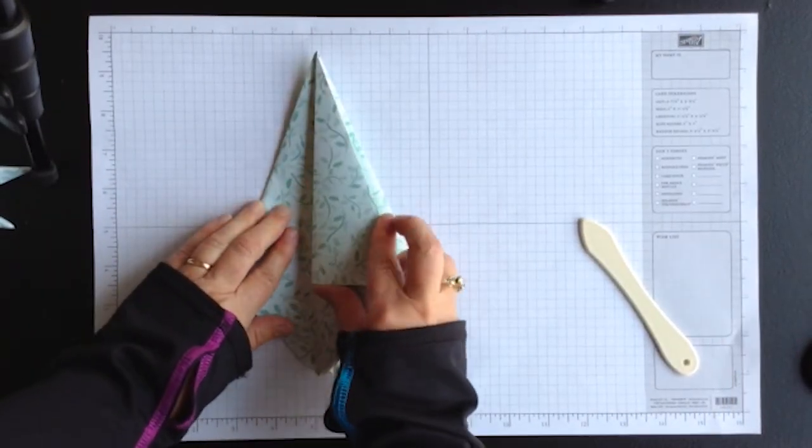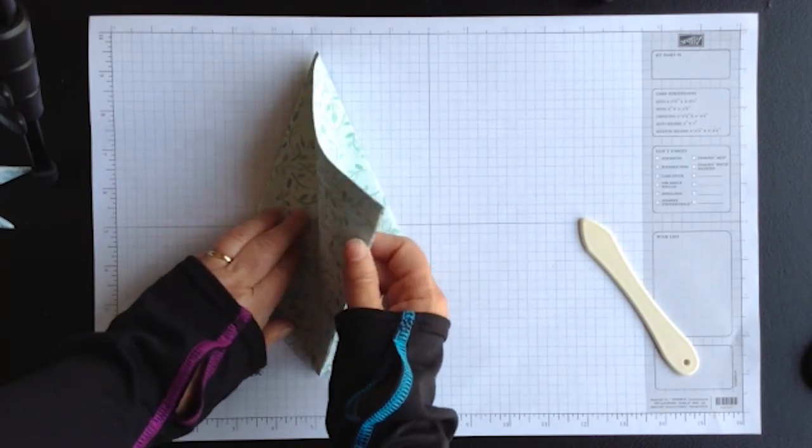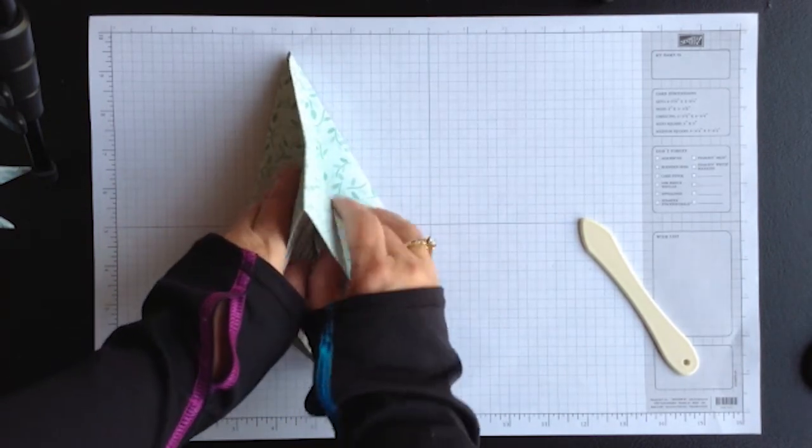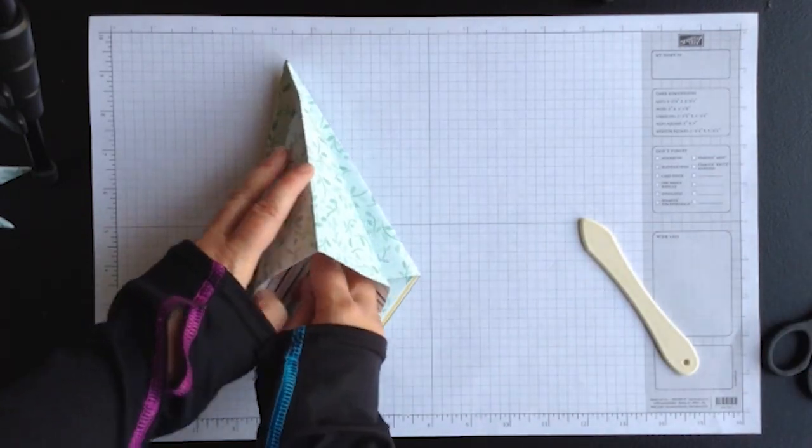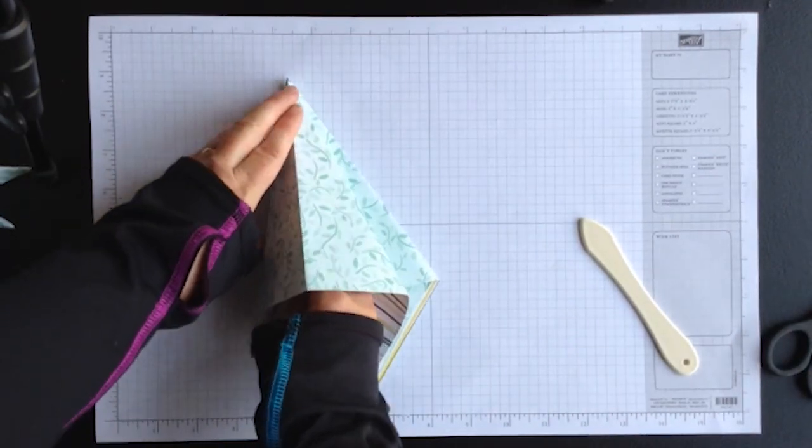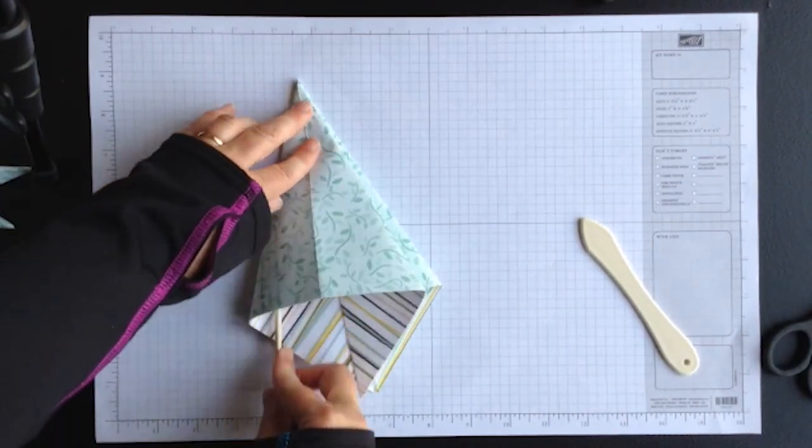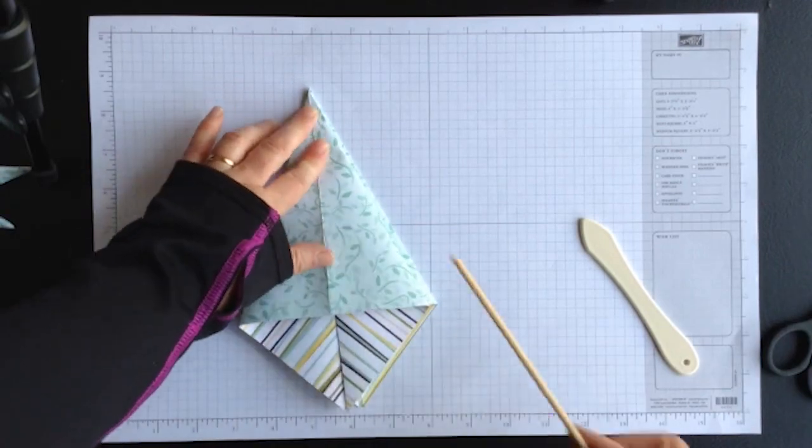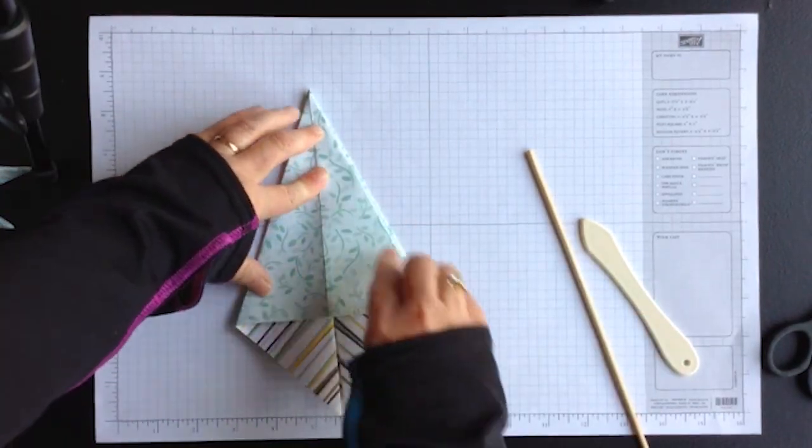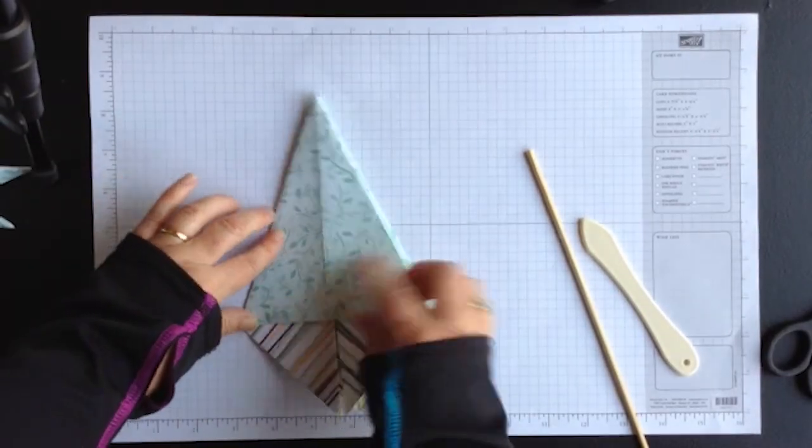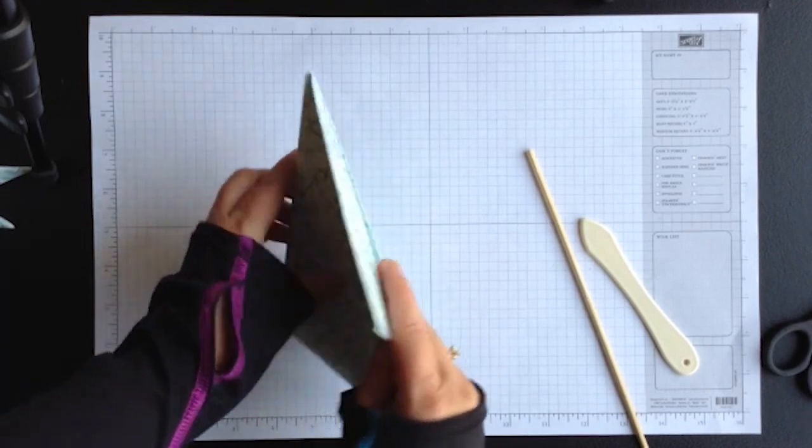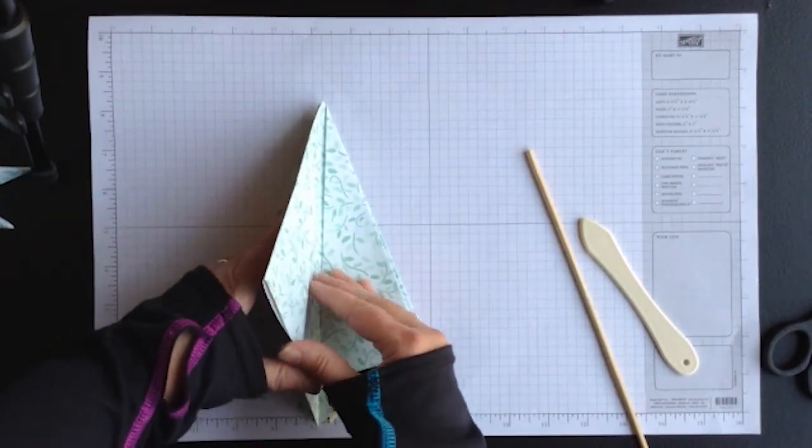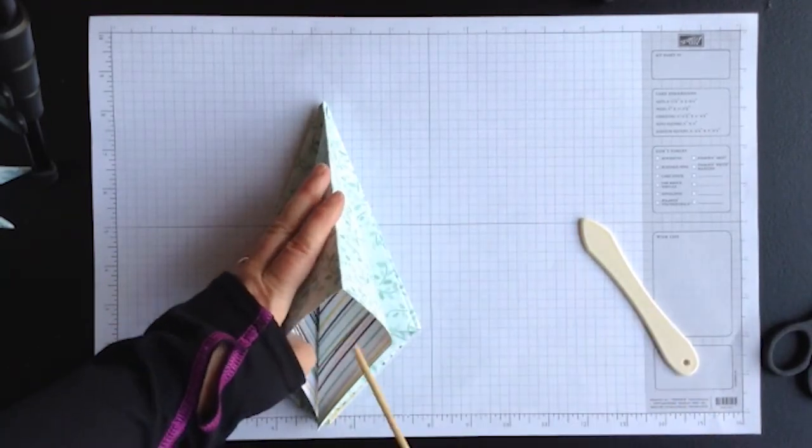Then take one of the flaps folded upright and open it up and this is where it's helpful to have a small pointed object to be able to get right up into that top peak so that it folds flat nicely. And again work your way around so that each of the four sections are folded in the same way.